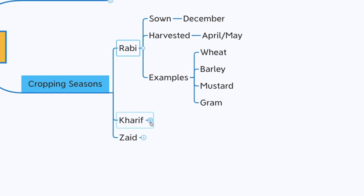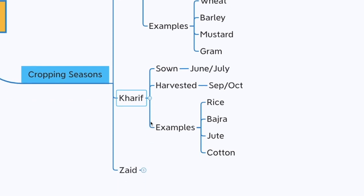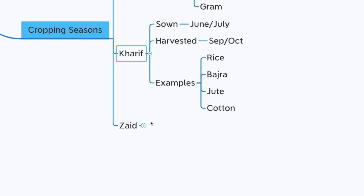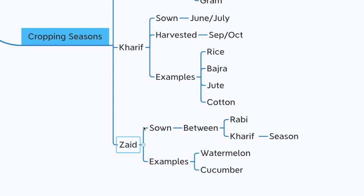The second season is Kharif. Here the seeds are sown in June or July and the crop is harvested in September or October. Examples include rice, bajra, jute, and cotton. The third season is Zaid — these crops are sown between the Rabi and Kharif seasons. Examples include watermelon, cucumber, etc.